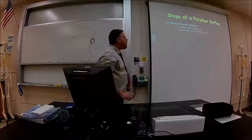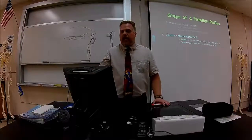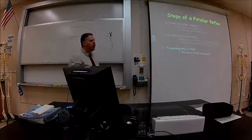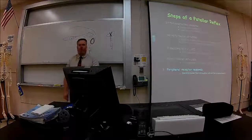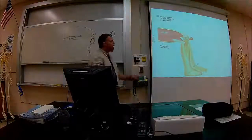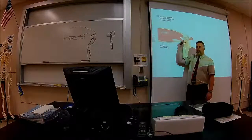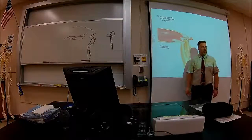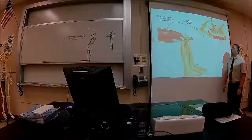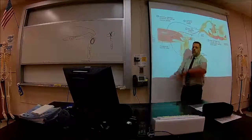So the steps of this are: the stimulus activates the receptor by tapping on it. The sensory neuron gets activated. Processing occurs in the central nervous system — in this case, the spinal cord; it doesn't go up to your brain. Then the motor neuron gets activated, goes to the effector, and contracts that muscle. You tap over here, and where it senses the stretch is right here in the muscle. It's actually in the muscle — the receptor feels the tension. It's going to send that signal to the spinal cord, which is then going to connect it and send it back to the muscle to contract.